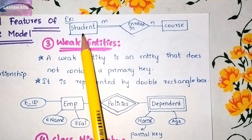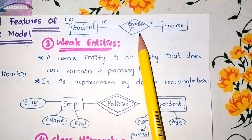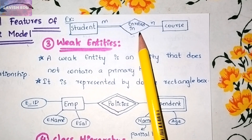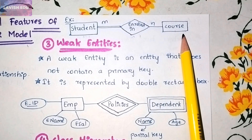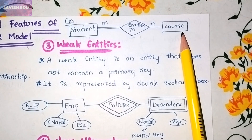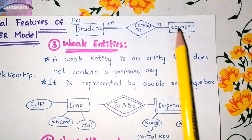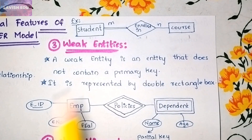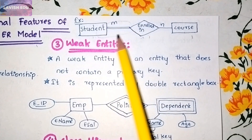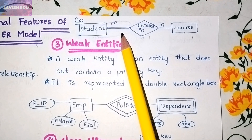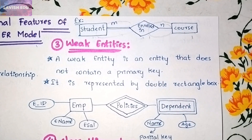Here is an example: Student and Course are entities, and 'Enrolled in' is the relationship. All students must enroll first — that is, all students must register. But enrolled students may or may not be allotted a course. This relationship uses participation constraints: the double line represents total participation and the single line represents partial participation.